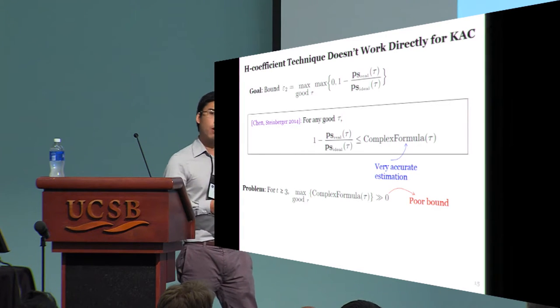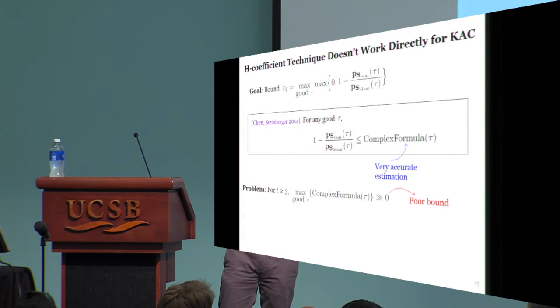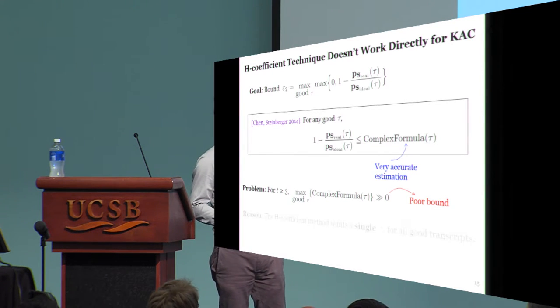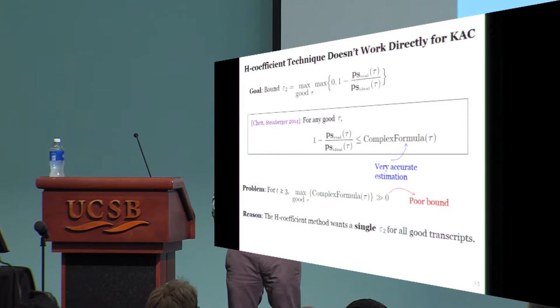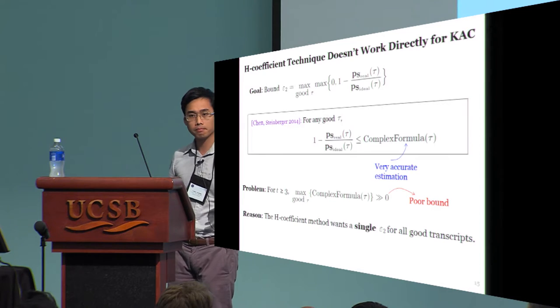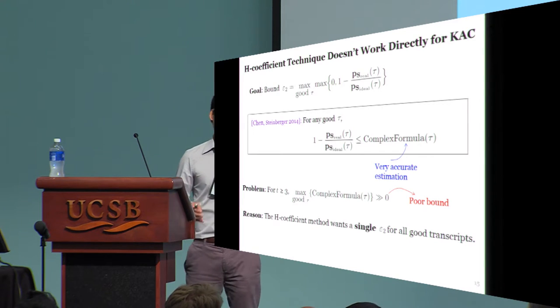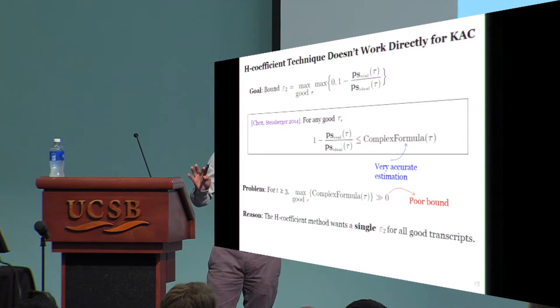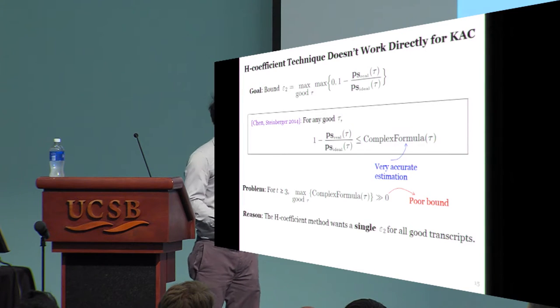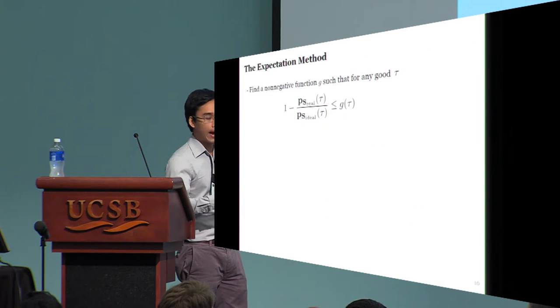So, let's pause for a moment and think, why does the H-coefficient technique fail here? The reason is that it demands a single epsilon 2 for all good transcripts. So, if just a few good transcripts misbehave, you will be screwed.